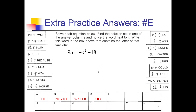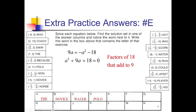Here we go with problem E. This one is all out of standard form — we definitely need to clean this up. To get my squared term positive, I'm going to add it to the left side, plus 9a, and then add the 18 to get it over to the left side as well. Since I have a squared coefficient of 1, I'm looking for factors of 18 that add up to 9. 3 and 6 does it if they're both positive. So I have a plus 3 and a plus 6, giving a equals negative 3 and negative 6. That's 'player' going in the E box.